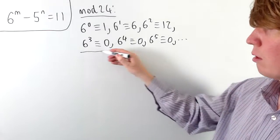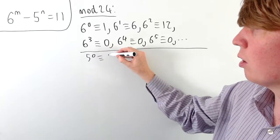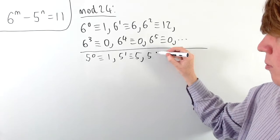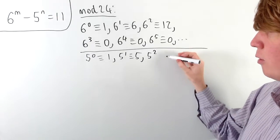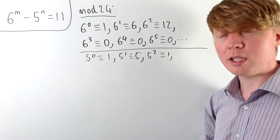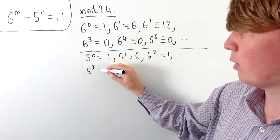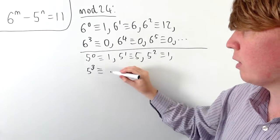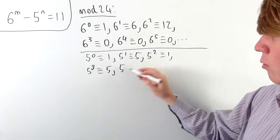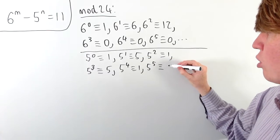Now let's compare this with powers of 5. 5 to the 0 is 1 mod 24. 5 to the 1 is 5. When we get to 5 squared, this is 25, which is equivalent to 1 modulo 24. This is very interesting — multiplying by another 5 gives 5 mod 24. So we get a repeating pattern of 1, 5, 1, 5: 5 to the 4 is equivalent to 1, 5 to the 5 is equivalent to 5, and so on.